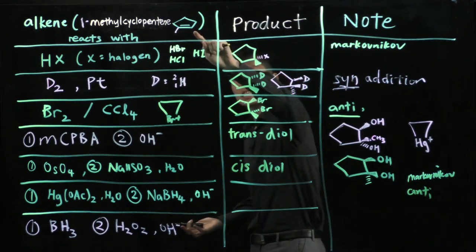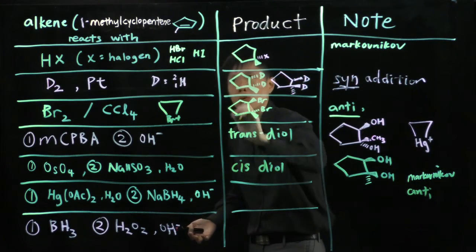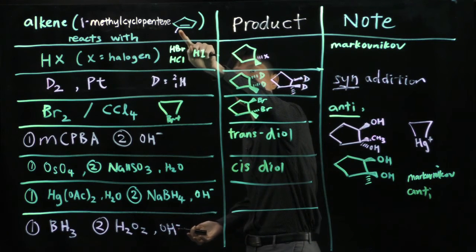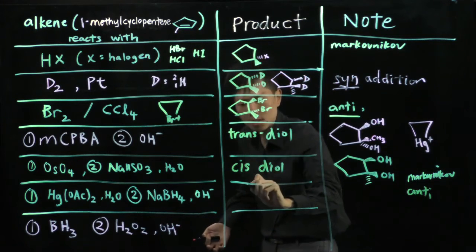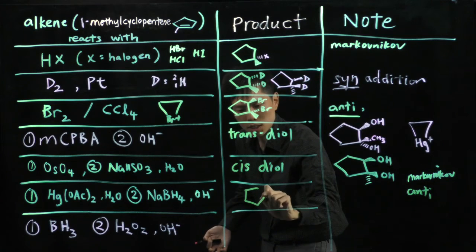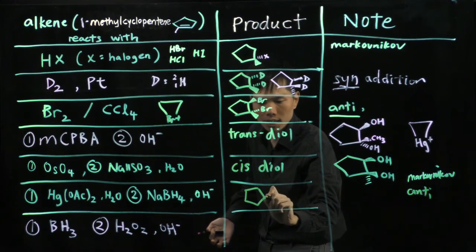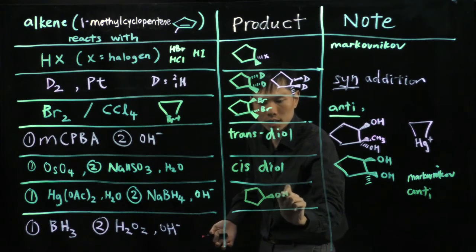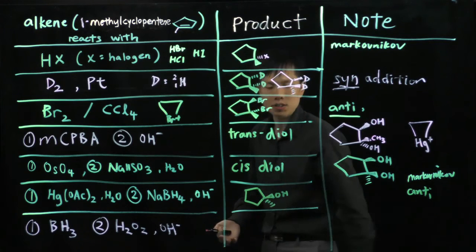what you have here is the final product would have the alcohol on the carbon that's more hindered. So this is what you have, the alcohol OH and methyl group on the same carbon.